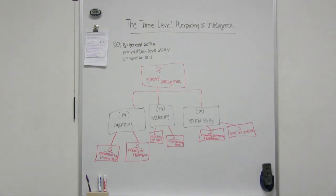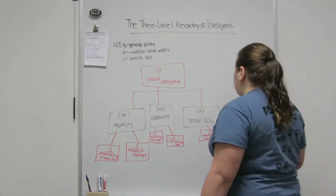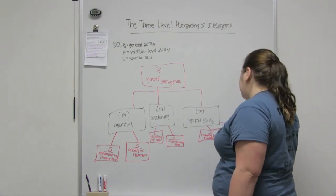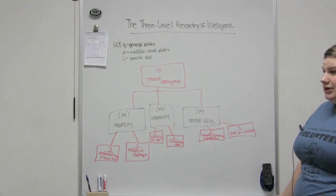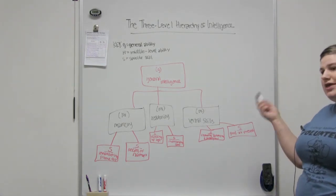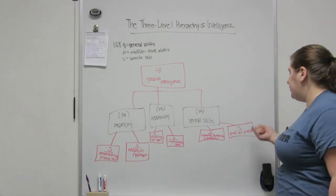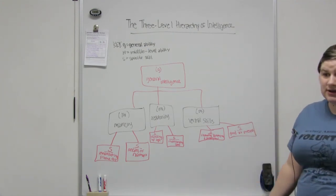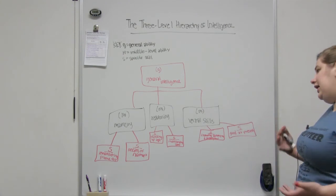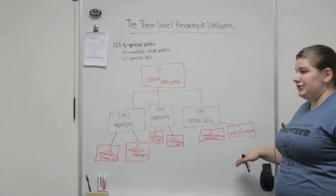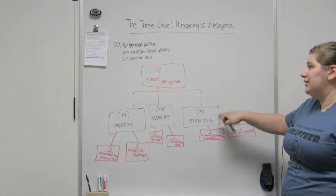And then with verbal skills, that can break down into knowing things like synonyms and antonyms. Most of the time we need a thesaurus, but some people can just walk around and be like, 'Oh, another word for that is this.' Or being good at presentations—so many people lock up, they're scared, they stumble over their words, there's a lot of ums. But if people are good at presenting, then it's a specific skill that they have in the middle level ability of verbal skills that makes up their general intelligence.